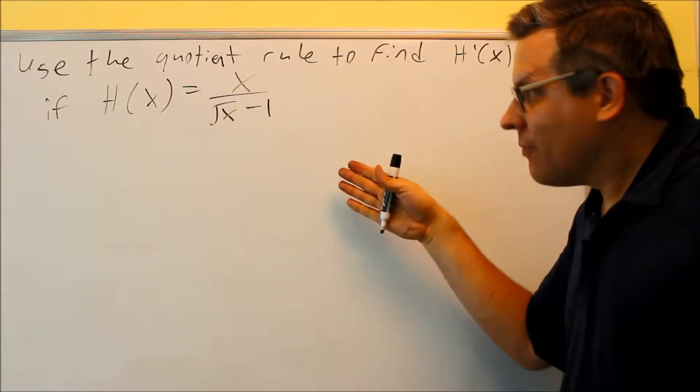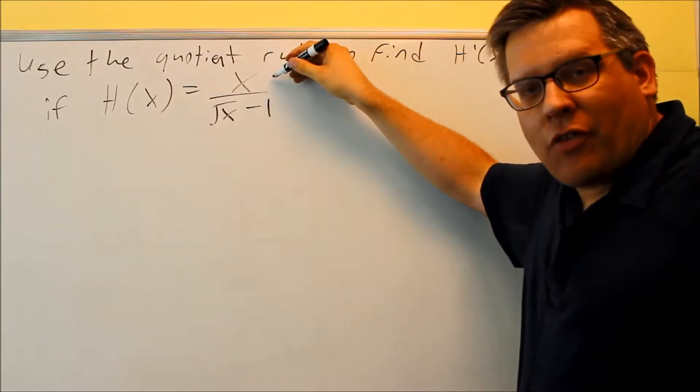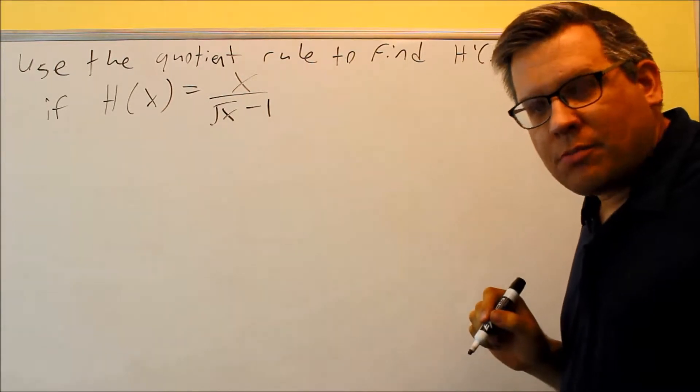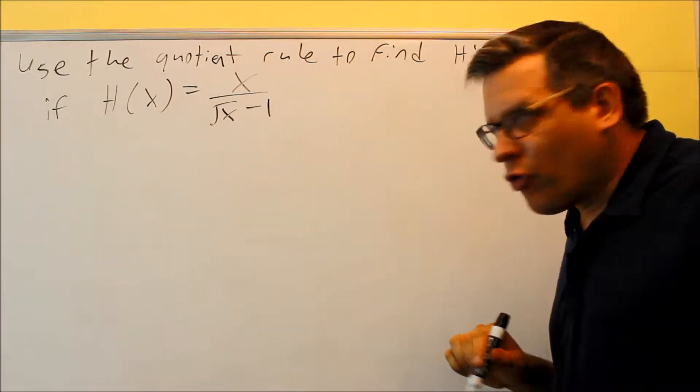We're going to apply the quotient rule here. Top one is f, bottom one is g. We want to put this into the quotient rule formula.